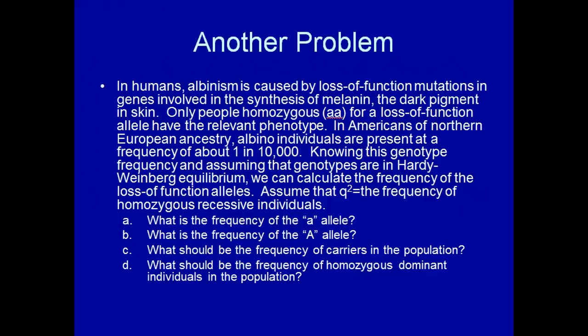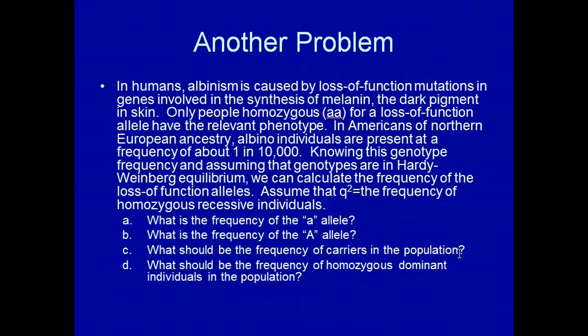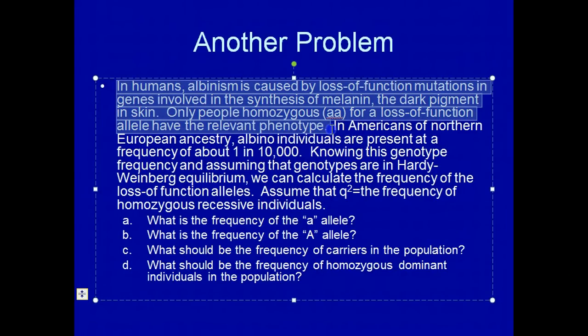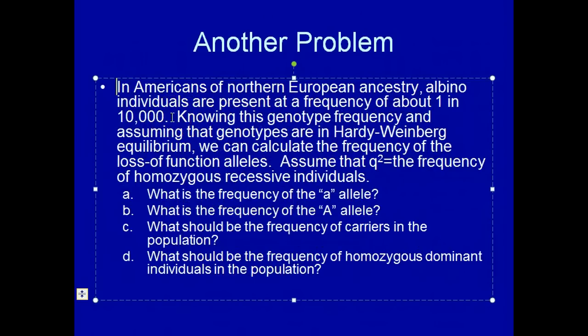In humans, albinism is caused by loss-of-function mutations in genes that involve the synthesis of melanin, the dark skin pigment. Only people who are homozygous recessive for a loss-of-function allele will have the relevant phenotype. In Americans of northern European ancestry, albino individuals are present at a frequency of about 1 in 10,000. Knowing this genotype frequency and assuming Hardy-Weinberg equilibrium, we can calculate the frequency of the loss-of-function alleles — including the frequency of carriers and homozygous dominant individuals.